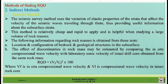The second approach is indirect methods. The first indirect method is the seismic method. The seismic survey method uses the variation of elastic properties of the strata that affect the velocity of seismic waves traveling through them, providing useful information about subsurface data. This method is relatively cheap and easy to apply, and is helpful when surveying a large volume of rock masses.